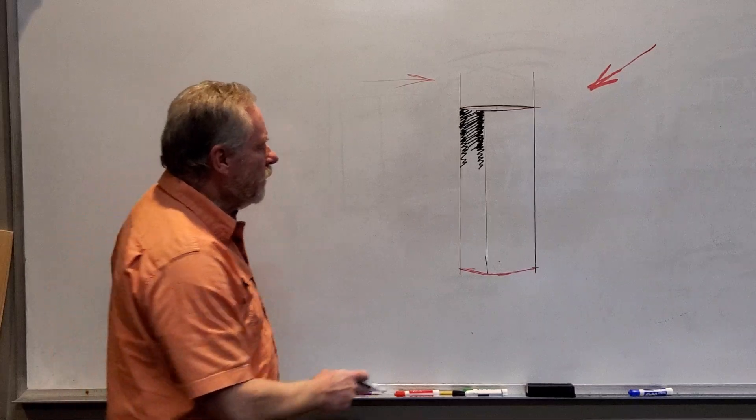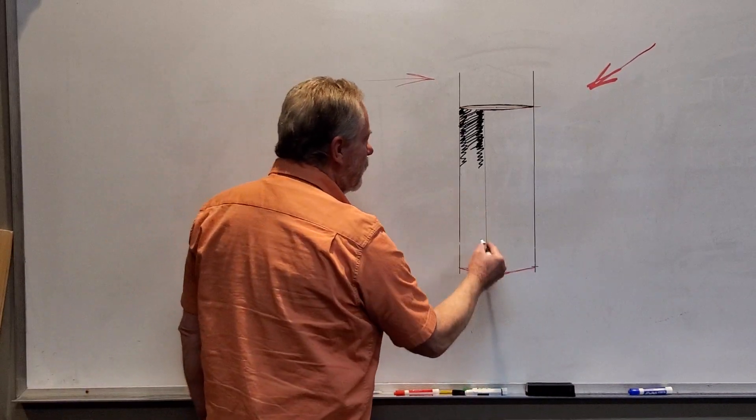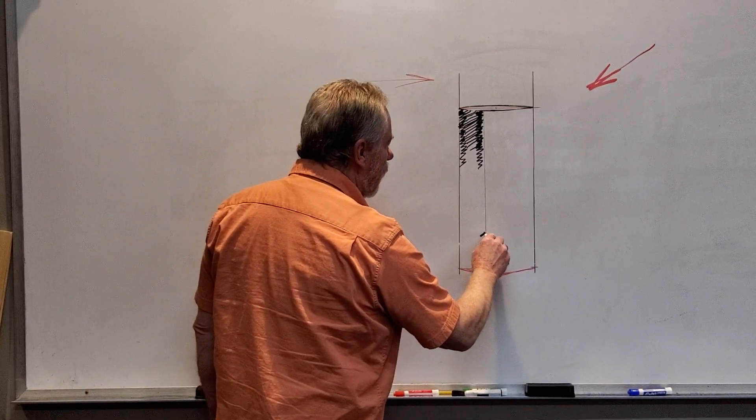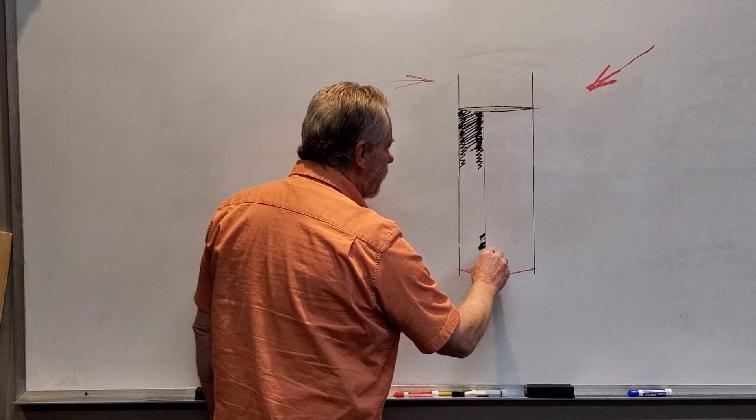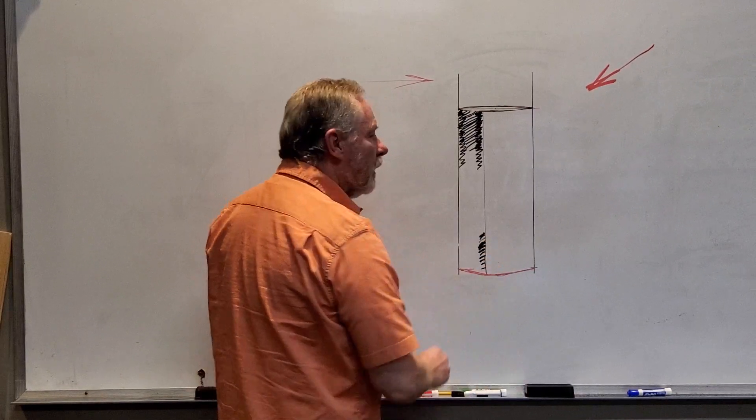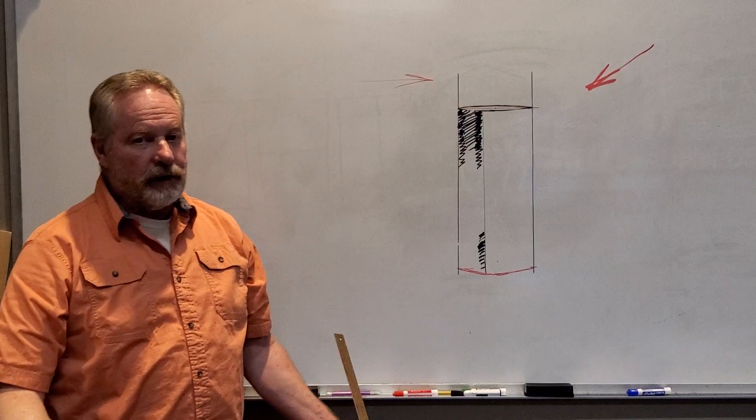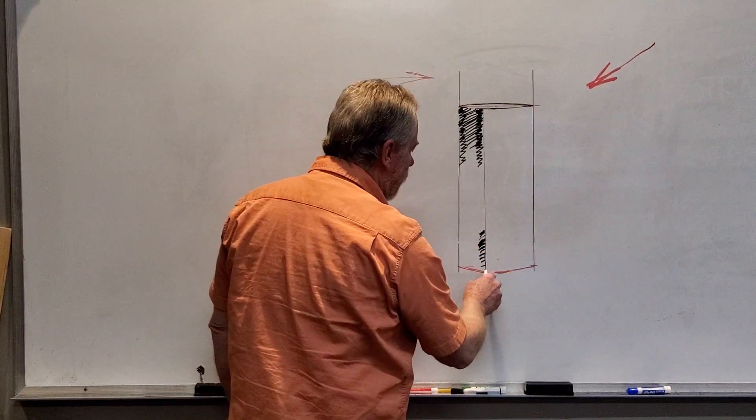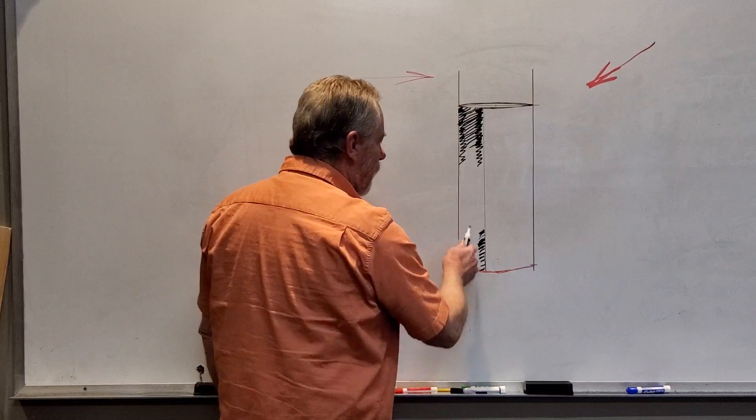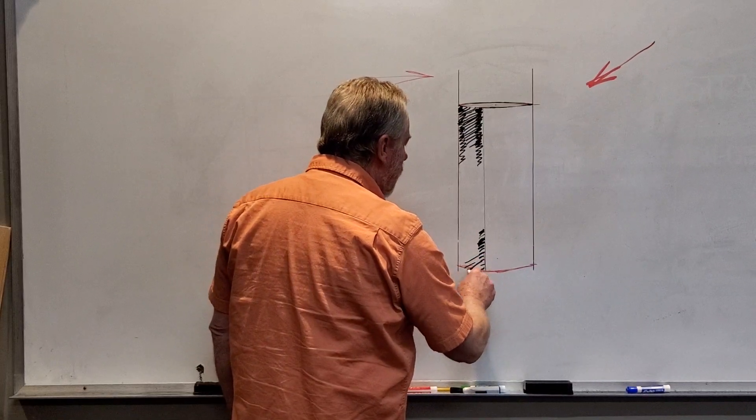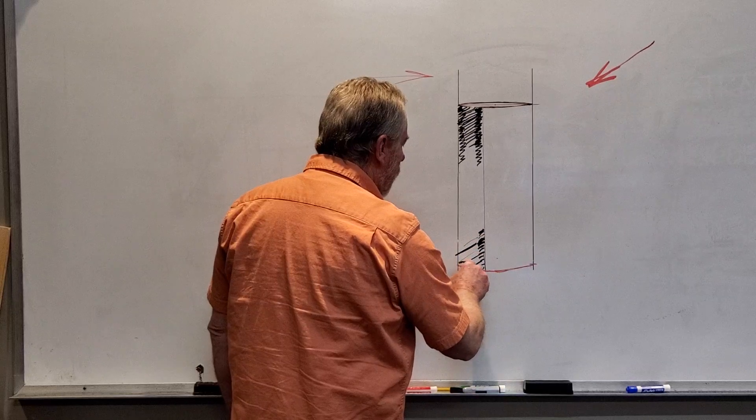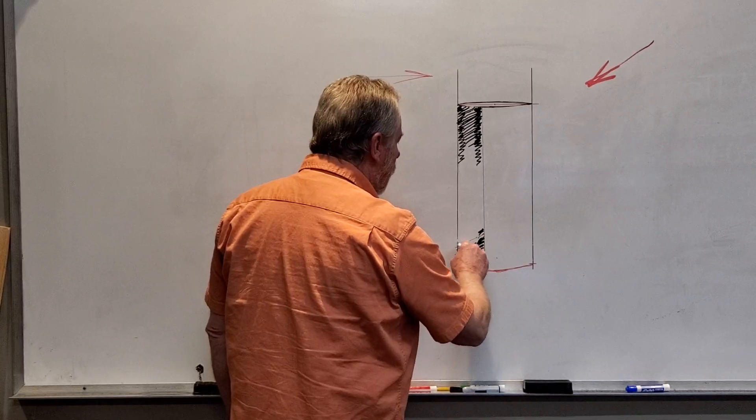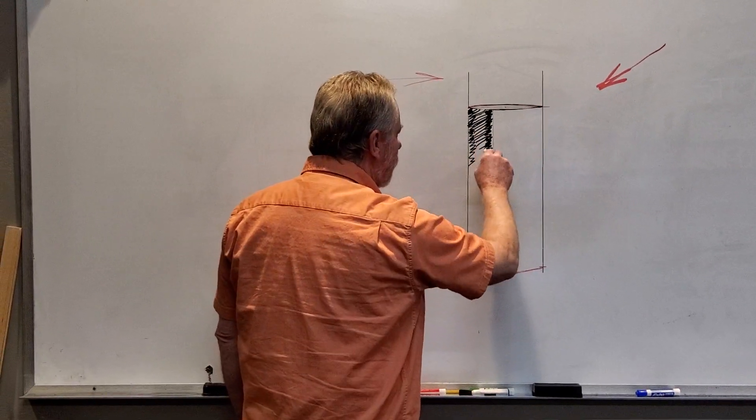Now an interesting thing happens when we get to the bottom. Even though this core shadow is very, very dark, as it comes down, it gets a little bit lighter. And why is that? Reflective light. The light is bouncing off of the surface that this is on and coming back up. And so, even though it's still dark down here, it won't be as dark down here as it is up here.